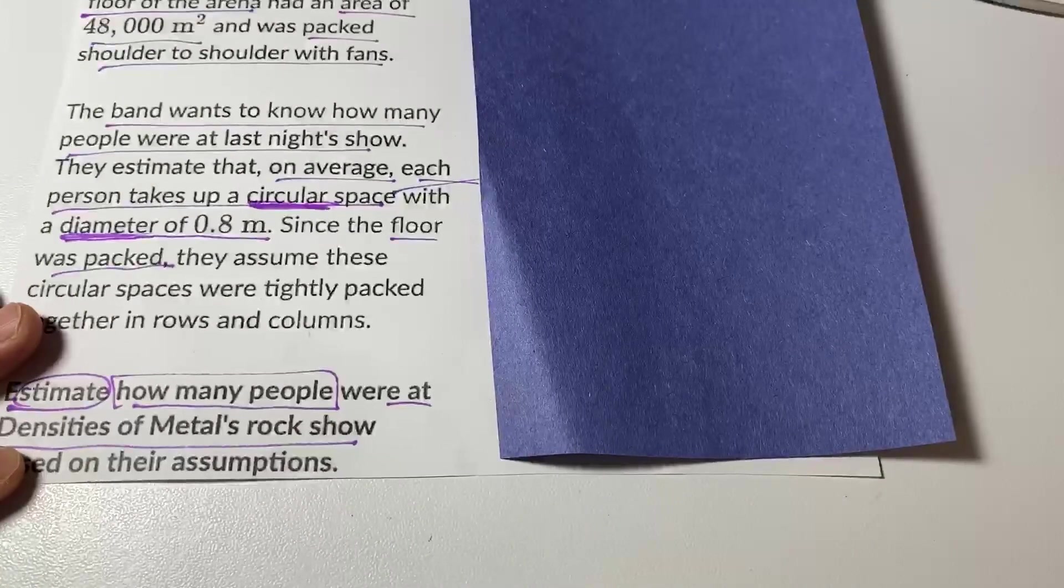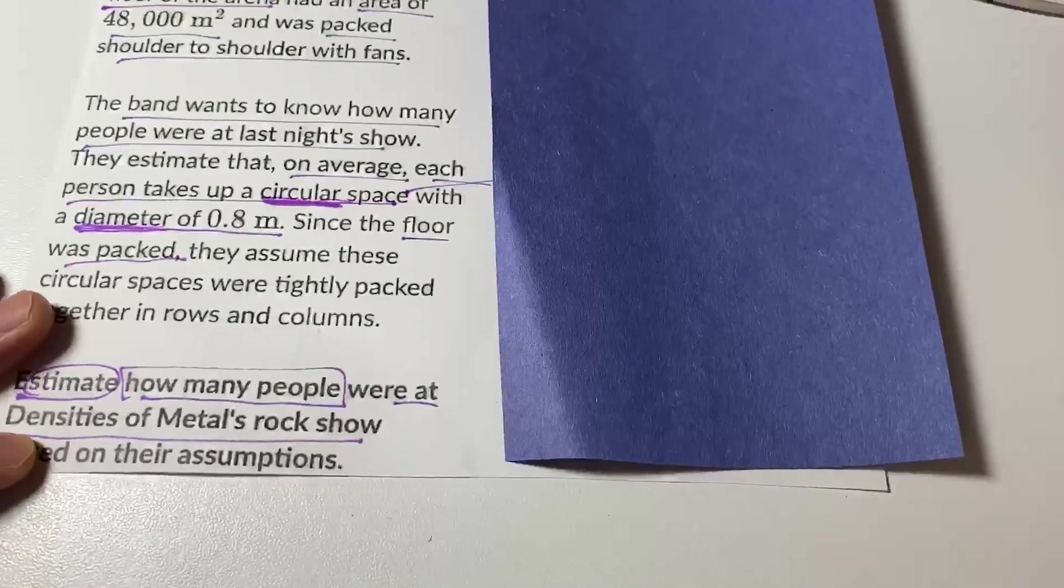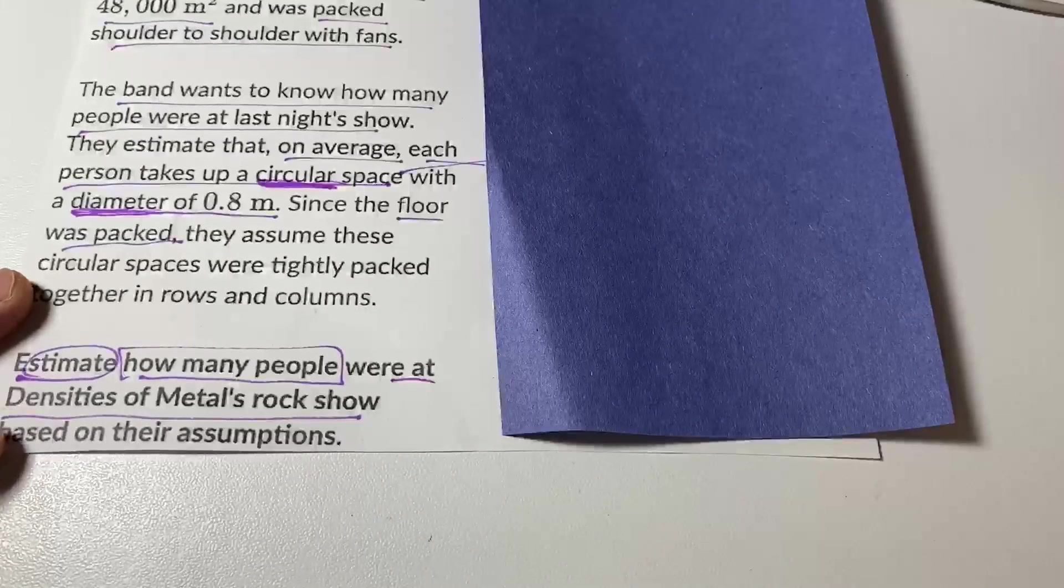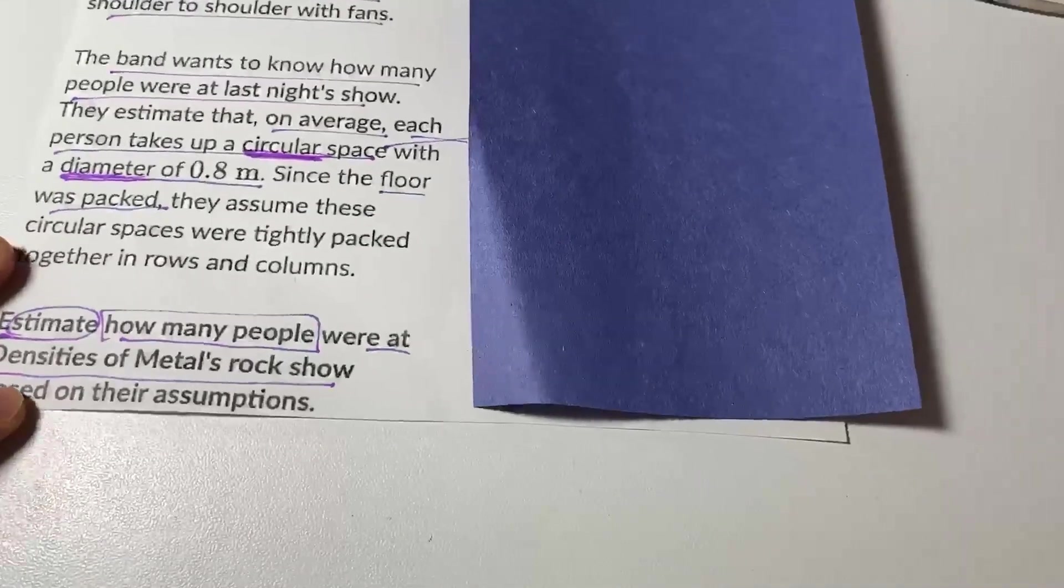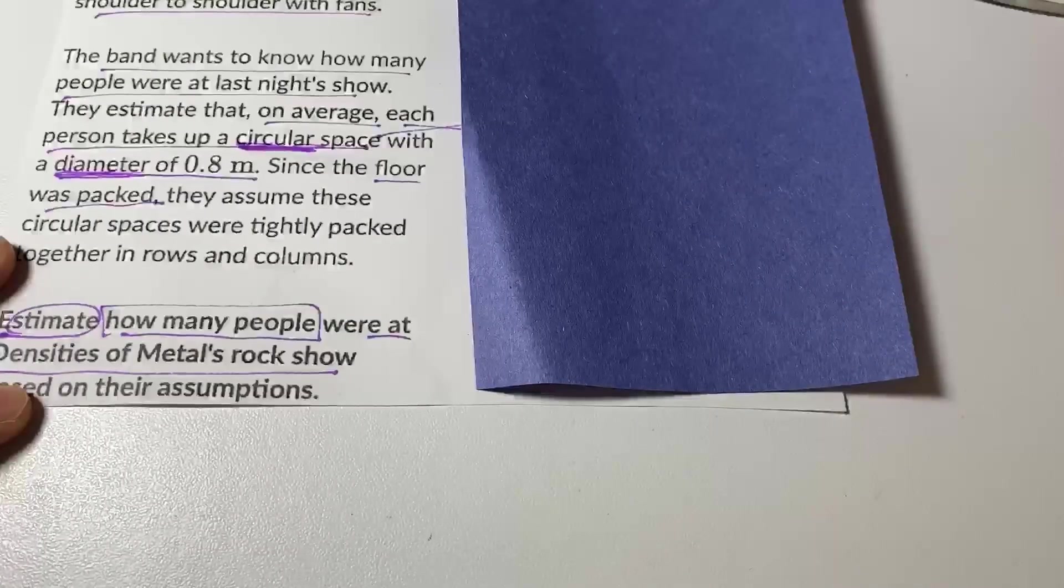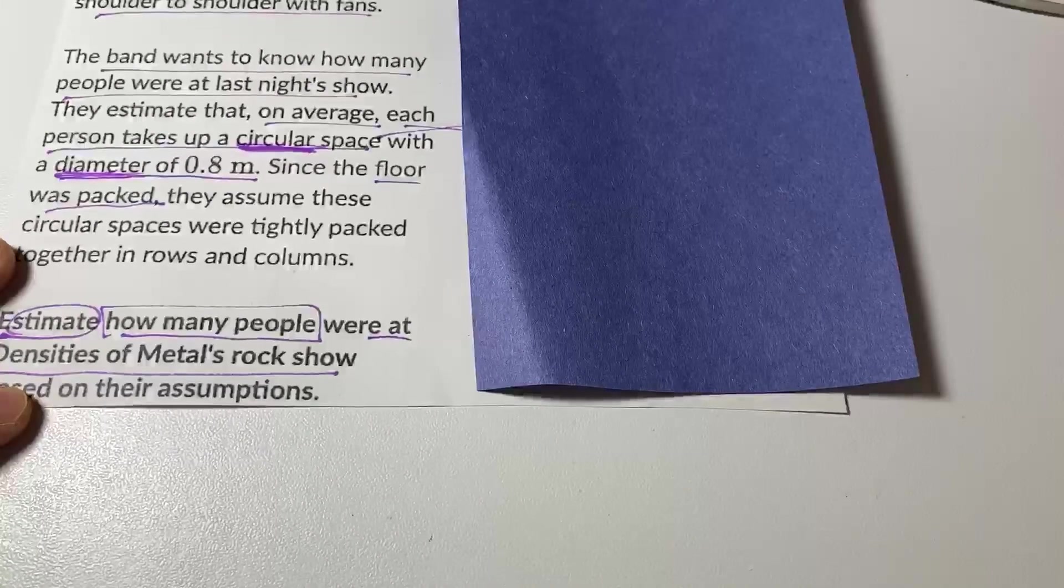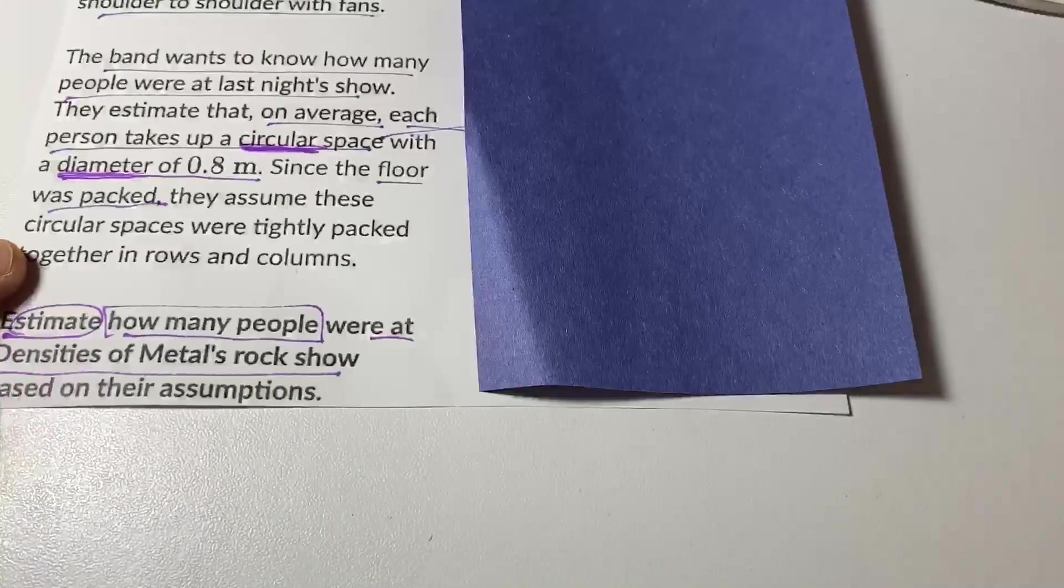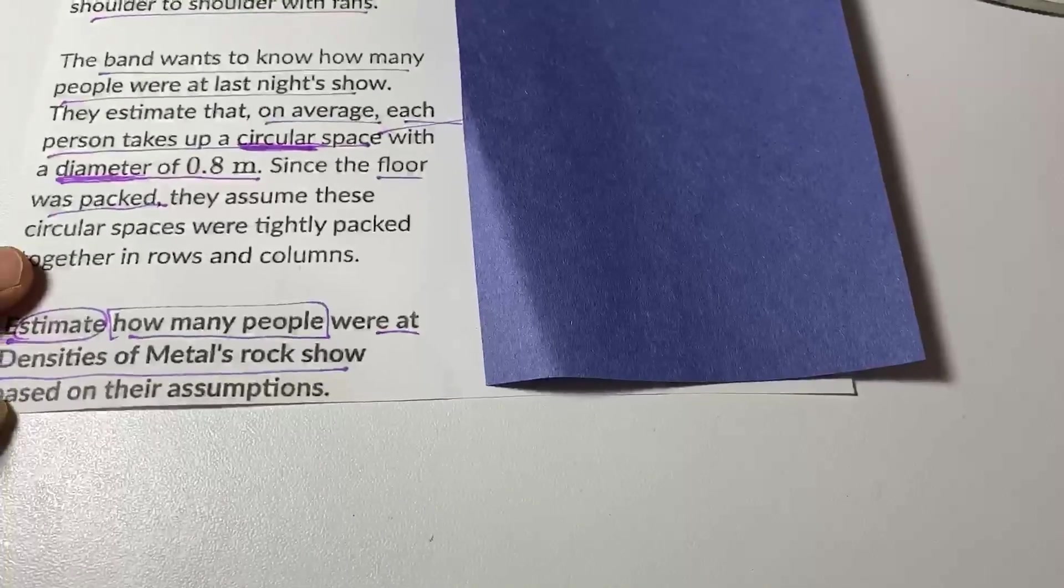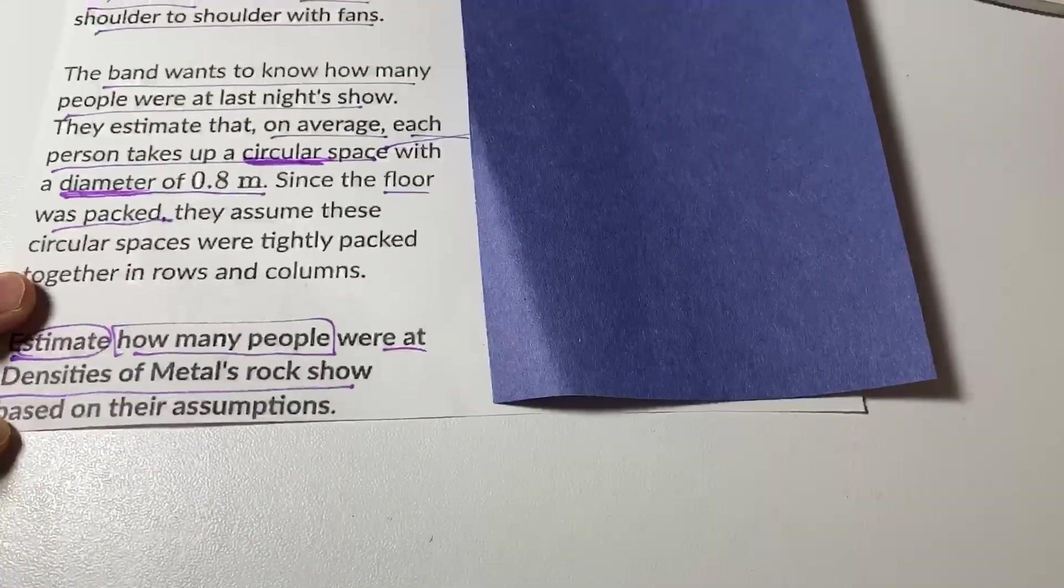The band wants to know how many people were at last night's show. They estimate that on average, each person takes up a circular space with a diameter of 0.8 meters. Since the floor was packed, they assume these circular spaces were tightly packed together in rows and columns. Estimate how many people were at Densities of Metal's rock show based on their assumptions.